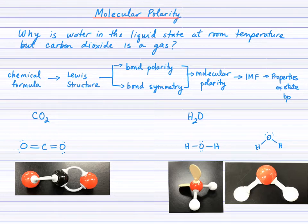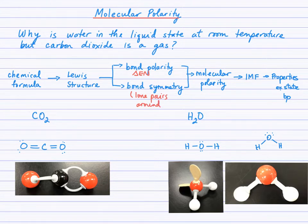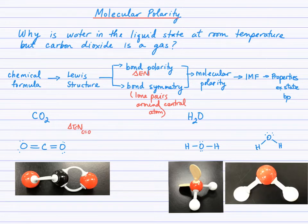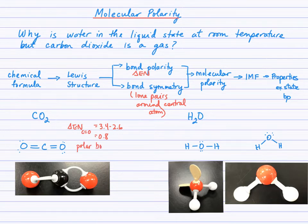We're not formally studying shape here. For bond polarity, we're going to look at electronegativity difference, and for bond symmetry, we're going to look for lone pairs around the central atom. Looking at the CO2 molecule, let's calculate the electronegativity difference of the carbon-oxygen bonds. The fact that they're double bonds doesn't change the calculation — we see oxygen at 3.4 and carbon at 2.6, giving a difference of 0.8. These are clearly polar covalent bonds.